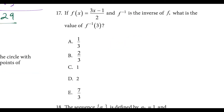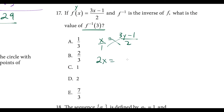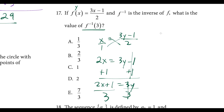Question seventeen: f inverse notation stands for the inverse function, and we have to find f inverse of 3. We find the inverse directly — normally this says y equals our function of x. If we switch x and y, we get x equals 3y minus 1 over 2, then solve for y. Multiplying both sides by 2: 2x equals 3y minus 1. Adding 1: 2x plus 1 equals 3y. Dividing by 3: our inverse function equals 2x plus 1 over 3.